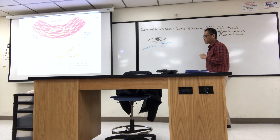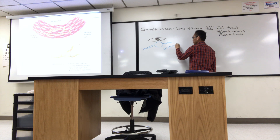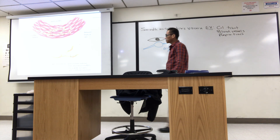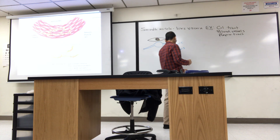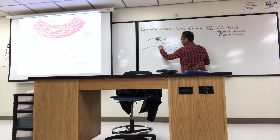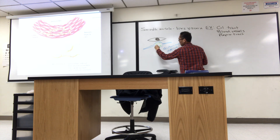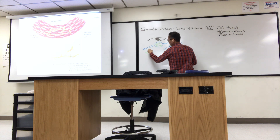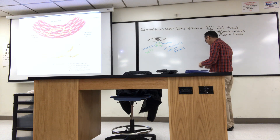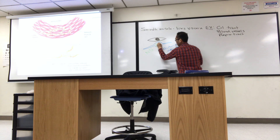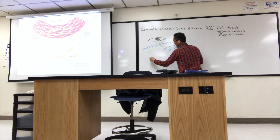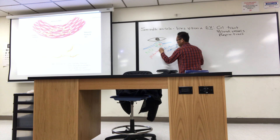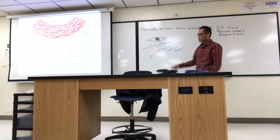Smooth muscle is controlled by the autonomic nerves. These little varicosities have neurotransmitters and mitochondria inside them, and little vesicles filled with neurotransmitters. There's a lot of mitochondria because you need energy to do this release.